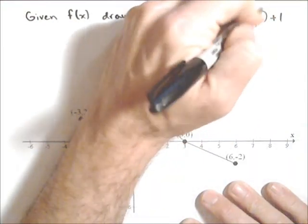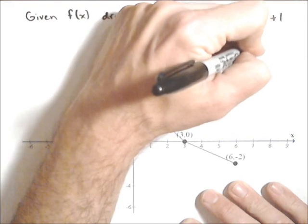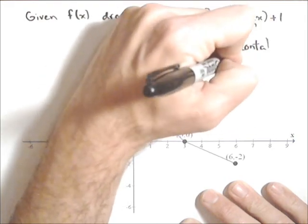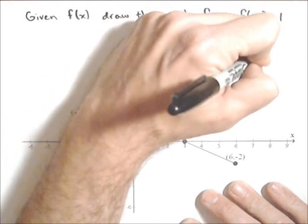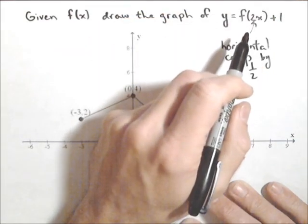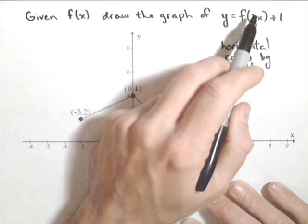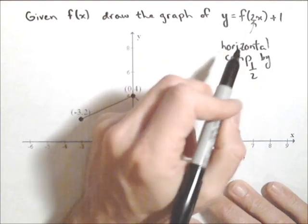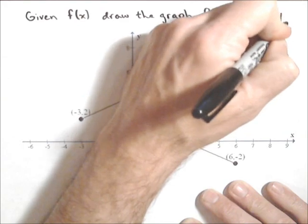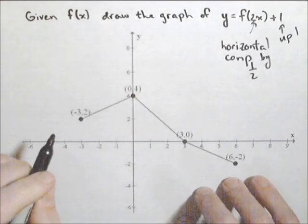Now, this 2x in here does a horizontal compression by a factor of 1/2. Remember, inside the parentheses is always kind of opposite of what we'd expect. So instead of multiplying the x values by 2, it's actually going to cut them in half. The 1 on the outside is going to move it up 1. So that's going to add 1 to all our y values.